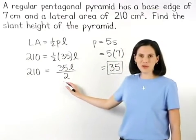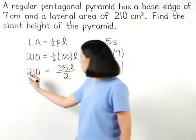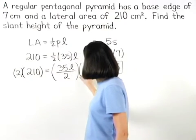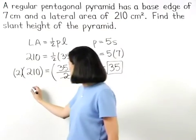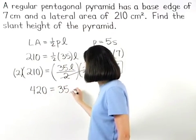Now to get rid of the fraction we multiply both sides of the equation by 2 to get 420 equals 35L.